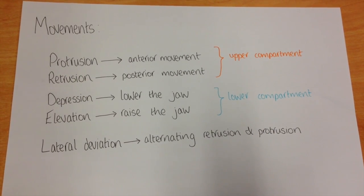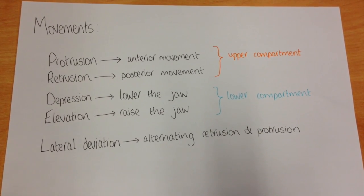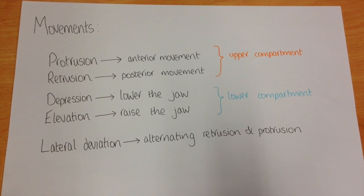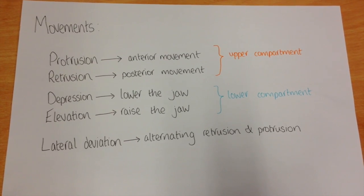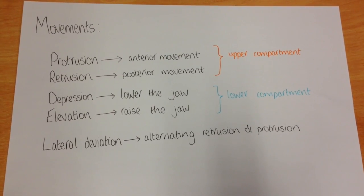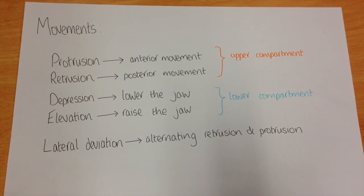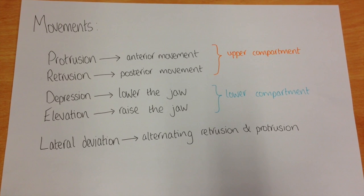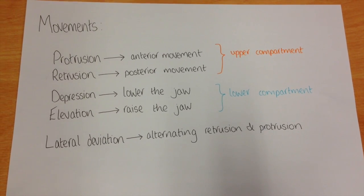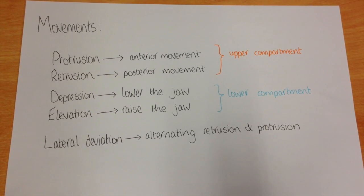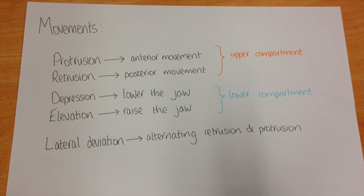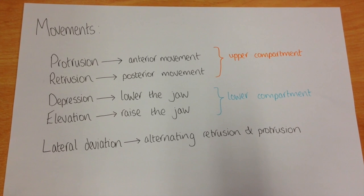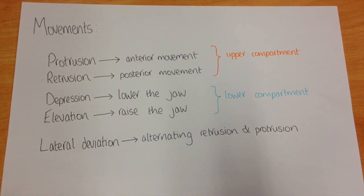Protrusion is the anterior movement of the intra-articular disc and the head of the mandible onto the articular eminence of the temporal bone. Retrusion is the return movement of the intra-articular disc and the head of the mandible into the mandibular fossa, which occurs in the upper compartment of the joint.